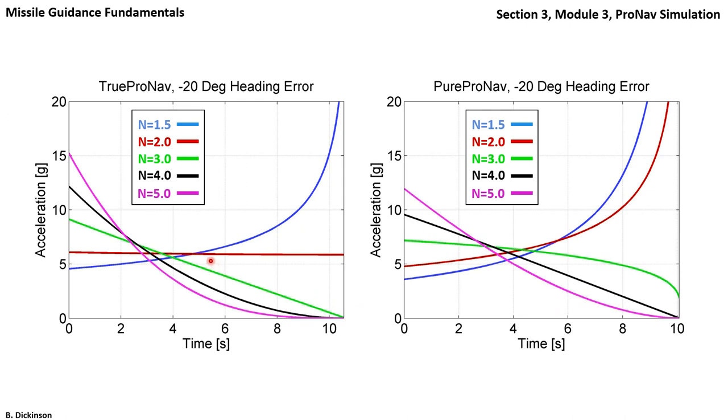The same type of trend happens for true ProNav. For low value of N, unbounded acceleration command. Here for N equal 2, interestingly, it's just about constant.